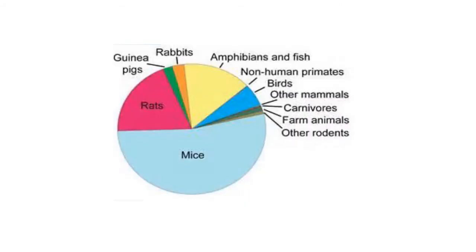Although a major portion of research animals is occupied by mice and rat, there is still a considerable amount of research involving rabbits, amphibians, non-human primates, birds, and other mammals. We are going to discuss the specific use of each of these animals in research.